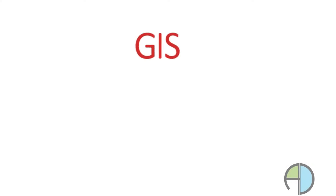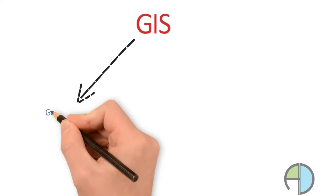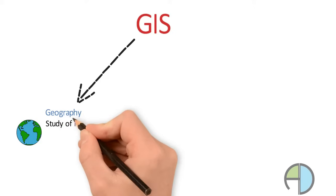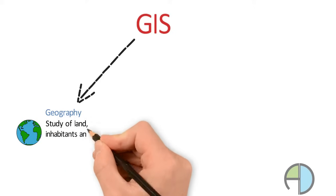Here G stands for geography. Geography is nothing but a study of land, inhabitants and objects on the surface of the earth.